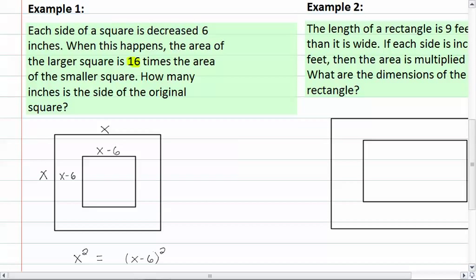Now that means that we have to multiply the smaller rectangle by how much larger the bigger one is. In this case, they tell us sixteen times. So we have x squared equal to sixteen times x minus six quantity squared.